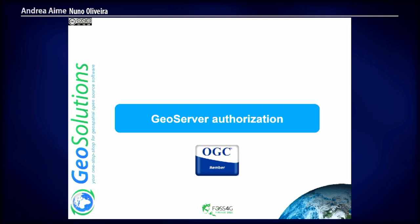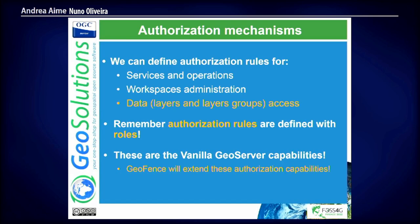Now let's look at authorization. This is, based on my experience, where we have the most custom extensions — because you already have some authorization rule system, and you need very customizable authorization. In the end, the filter you want to apply to the SQL query that goes to your database will come from this authorization system. In the vanilla server, we can define rules for services, operations — so who can do a WMS GetMap or not — workspaces, and data. Remember, they can only be defined against roles, not against users.